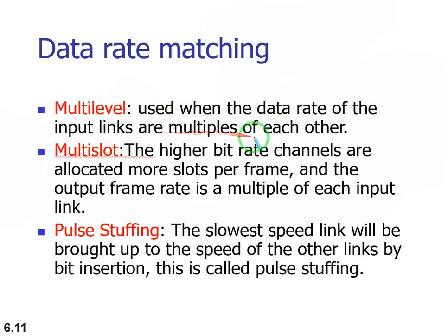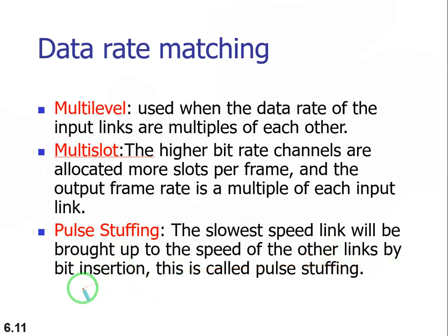Multi-level means the data rates of input links are multiples of each other — for example, one Mbps, two Mbps, four Mbps, and so on. Multi-slot means higher bit-rate channels are allocated more slots per frame, and the output frame rate is a multiple of each input link. Pulse stuffing means the slowest link is brought up to speed by bit insertion.